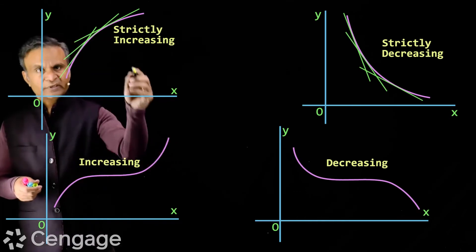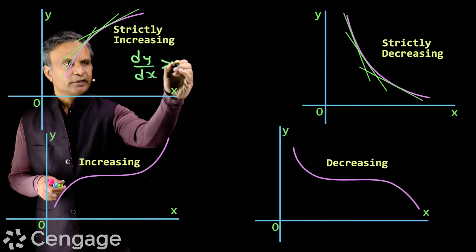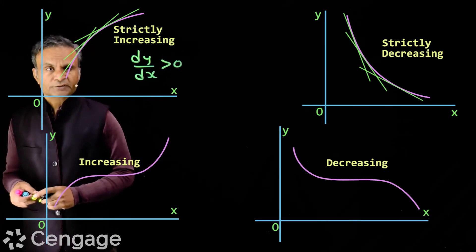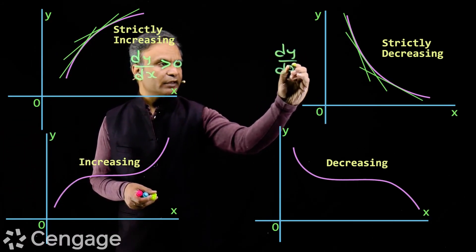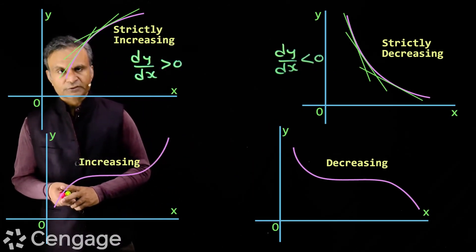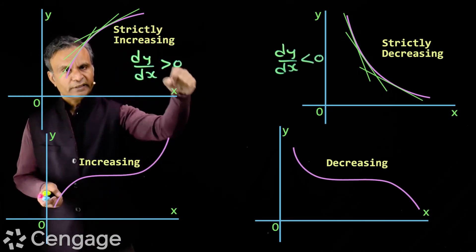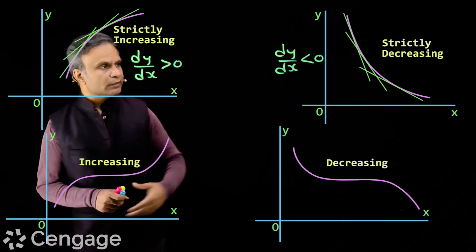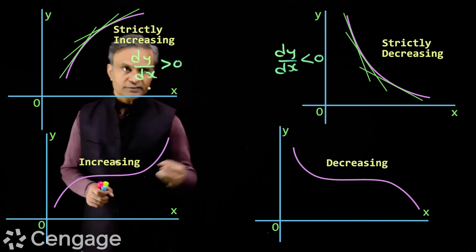For a strictly increasing function, dy/dx > 0 for all x in the domain of the function. And for a strictly decreasing function, dy/dx < 0 for all x in the domain of the function. These are the derivative-based definitions of strictly increasing and strictly decreasing functions.